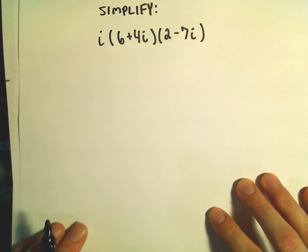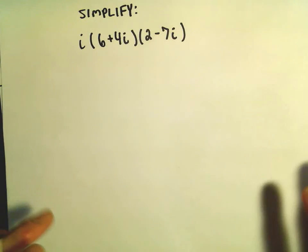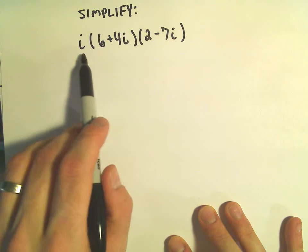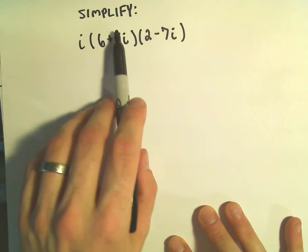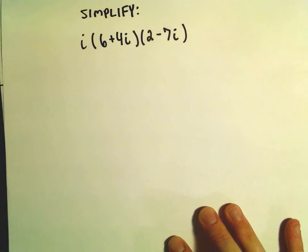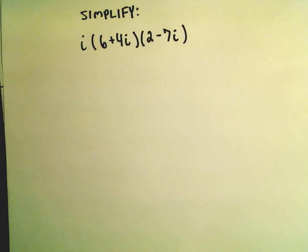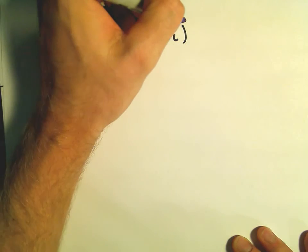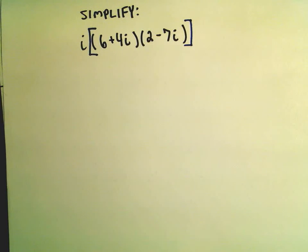Alright, so again since you're multiplying, we can either multiply the i by the first factor or we can multiply the i by the second factor. You definitely don't distribute because there's not a plus or a minus in there. And I think what I'm going to do first is I'm actually going to do the multiplication between the 6 plus 4i and the 2 minus 7i.